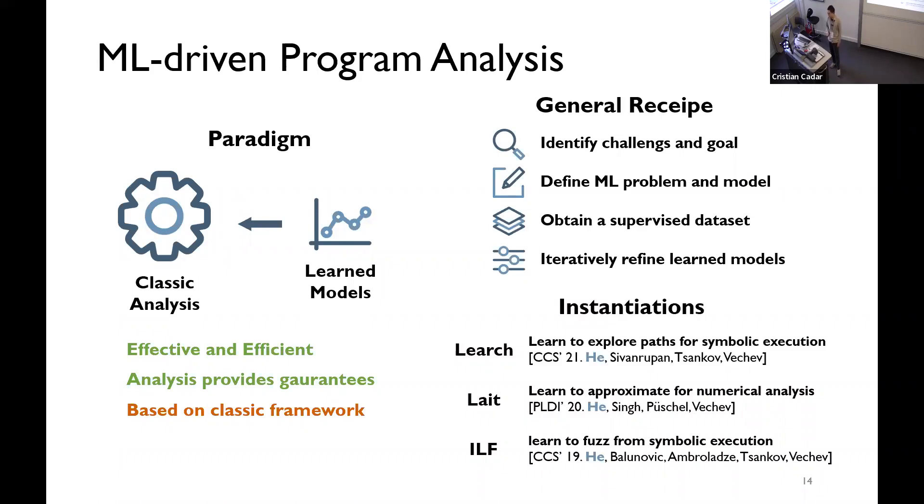What I present can be summarized in a general recipe that we have applied to some works. NERJ is one of these. In DELIGHT, we try to use this recipe to speed up abstract interpretation. And, in IRF, we try to fuzz faster from the test cases from symbolic execution.